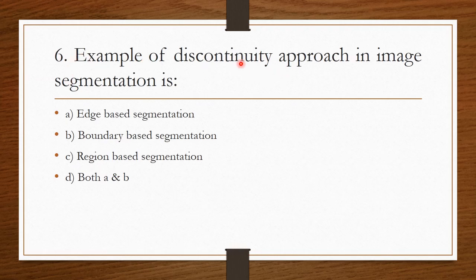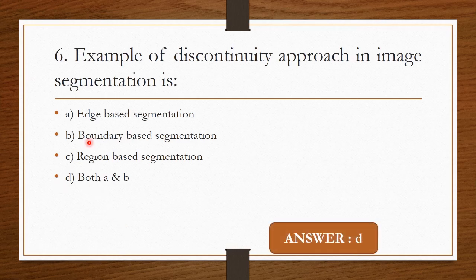Question 5: An example of the discontinuity approach in image segmentation is — Option A: Edge based segmentation. Option B: Boundary based segmentation. Option C: Region based segmentation. Option D: Both A and B. The correct answer is Option D — Both A and B. The discontinuity approach includes edge based segmentation as well as boundary based segmentation.